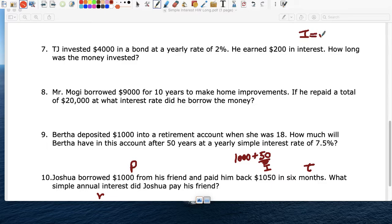So I equals PRT. The I is 50. The principal was $1,000. The R is what we want to know, what percentage the friend charged. And the time is six months. So be careful. Six months is 6 over 12.